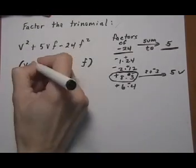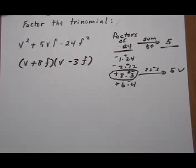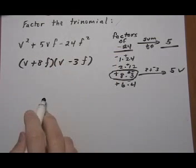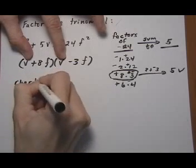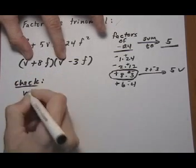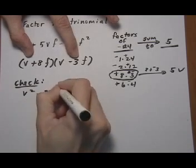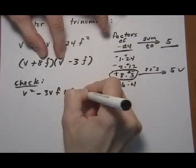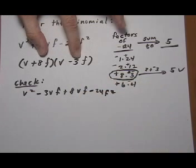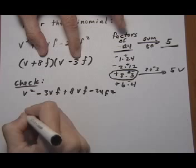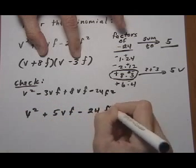So let's go ahead and put it in. Positive 8, minus 3. And then we can just foil it out to double check to make sure it works. V times v is v squared. So this is the check. Minus 3vf plus 8vf minus 24f squared. And that gives us v squared plus 5vf minus 24f squared.